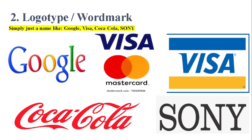The second type of logo is the logotype or wordmark. It is simply just a name — like Google, Visa, Coca-Cola, Sony, and others. Look here at Google — it is just a word used as their logo. This type of logo is called the wordmark logo.